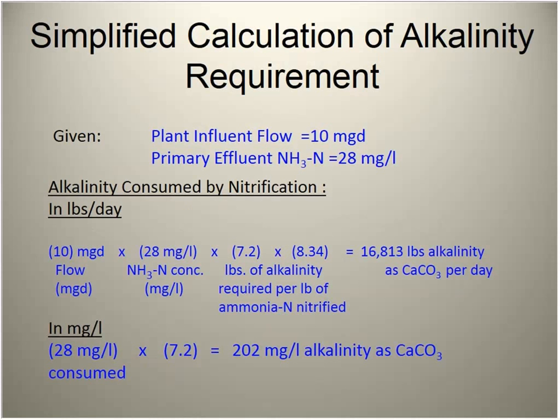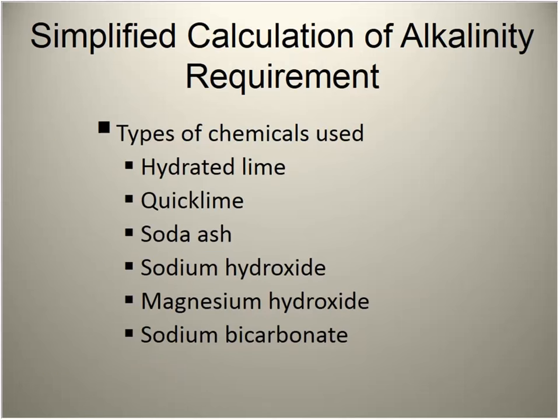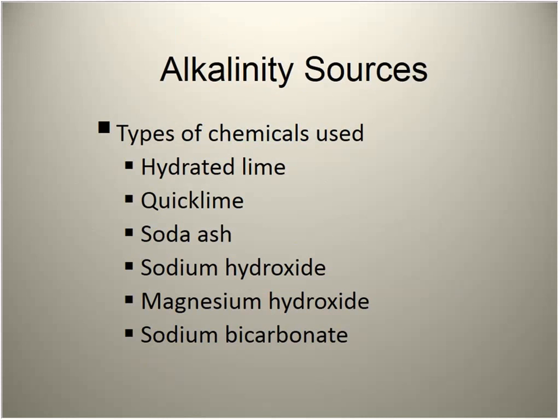For a 10 MGD plant with influent ammonia of 28 mg/L, requiring approximately 7.2 pounds of alkalinity per pound of ammonium, the calculation shows you need 16,800 pounds of alkalinity coming into the process, which works out to dosing 202 mg/L. Chemicals that can be used include hydrated lime, quick lime, soda ash, sodium hydroxide, magnesium hydroxide, and sodium bicarbonate.